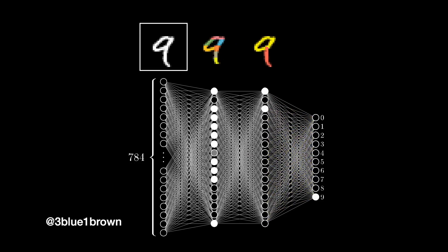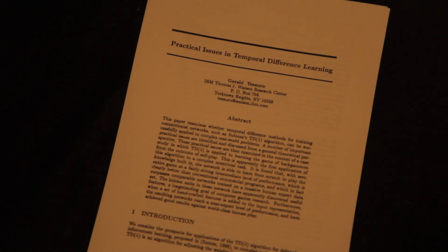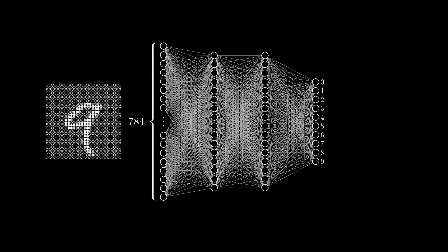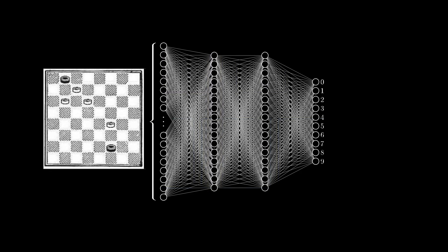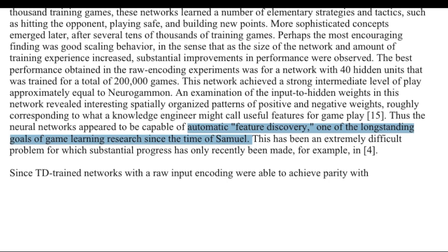After this result, Gerald Tessaro had a brilliant insight. He thought, if multi-layer neural networks can learn to recognize digits, why can't they learn to recognize good game positions? He famously wrote, "A network which is capable of automatic feature discovery is one of the long-standing goals of research since Samuel's checkers."